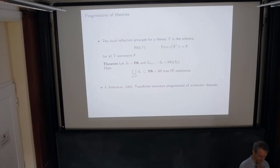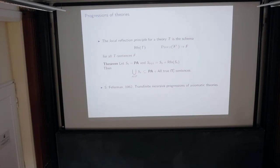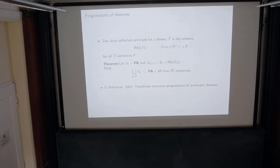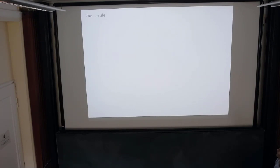A stronger reflection principle was used in Feferman's paper from 1962, 'Transfinite Recursive Progressions of Axiomatic Theories.' There he actually managed to show that there are certain progressions so that you can prove any true arithmetic statement in the progression. This idea is related to the omega rule.